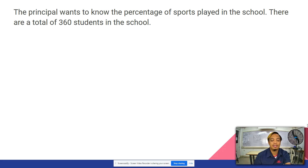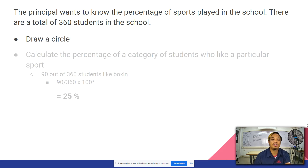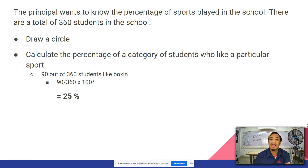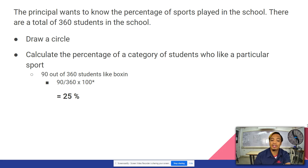Let's have another example. The principal wants to know the percentage of sports played in the school. There are a total of 360 students. We need to calculate the percentage of students who like each particular sport. Starting with boxing: 90 out of 360 students like boxing, so 90 over 360 times 100 equals 25%.